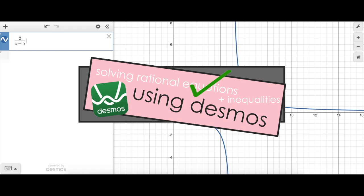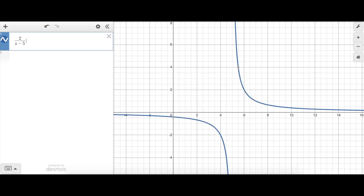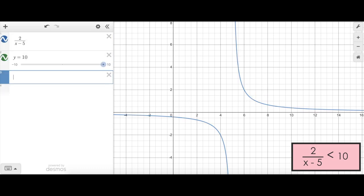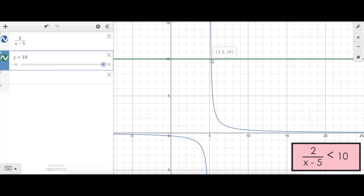What I want to do next is show you how to solve a rational inequality problem using Desmos. And I posted a video on how to use Desmos to solve polynomial inequalities. I'm going to use a similar approach here. So let's say I wanted to find out when 2 over x minus 5 is less than 10. I've plotted 2 over x minus 5 in blue here. What I'll do is just plot y equals 10, and I'll use a similar approach to find the point of intersection.